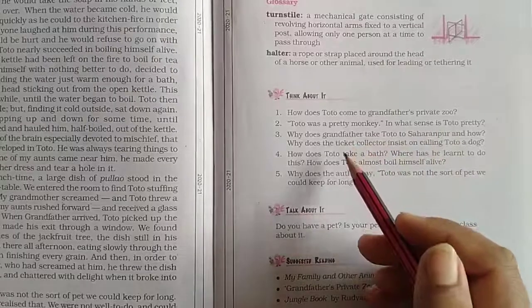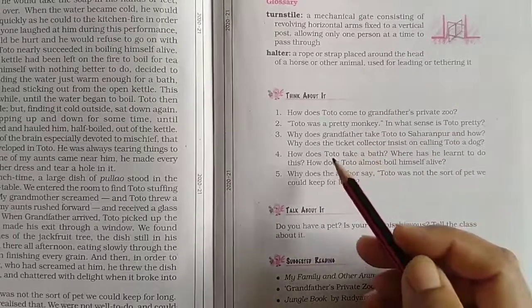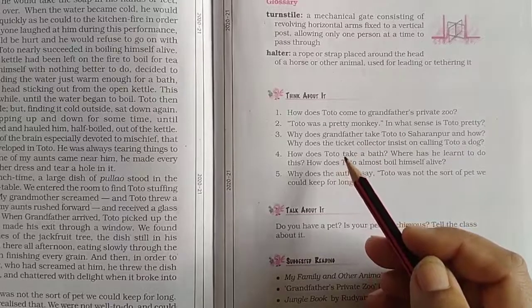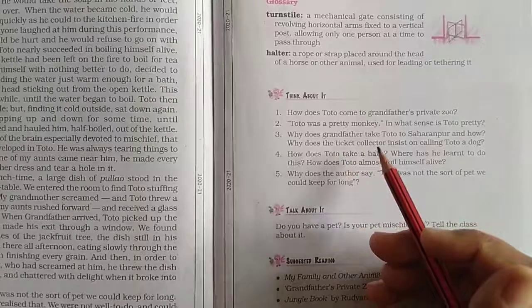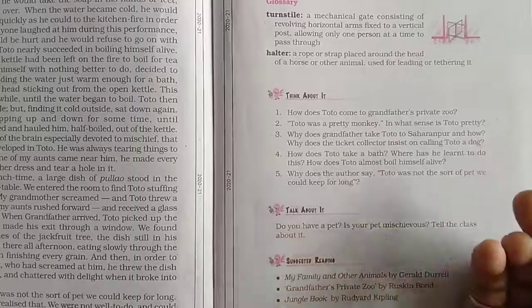Toto had bright, sparkling, mischievous eyes, deep-set eyebrows, and white pearly teeth. His dry, wrinkled hands had quick, wicked fingers, and a tail which not only added to his beauty but also worked as his third hand. His mischievous nature added charm to his looks, according to the grandfather.